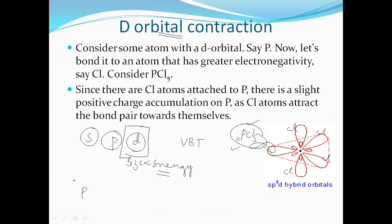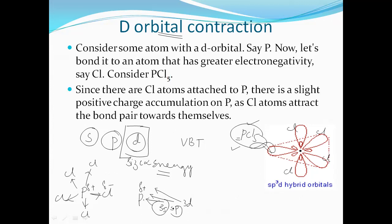Phosphorus in PCl5 is surrounded by five chlorine atoms, which are more electronegative than phosphorus. These electronegative chlorines draw the bonded pair of electrons closer towards themselves, acquiring a partial negative charge, while phosphorus acquires a partial positive charge. Due to this partial positive charge, the nucleus of phosphorus draws the outer electrons — in the 3s, 3p, and 3d orbitals — more closely towards it, causing contraction of those orbitals.